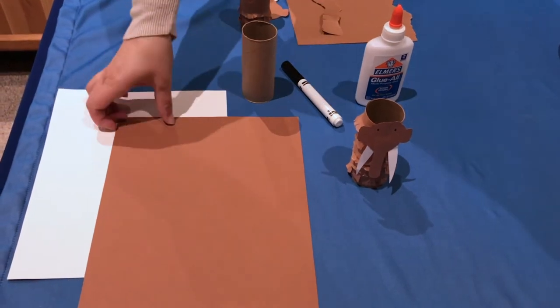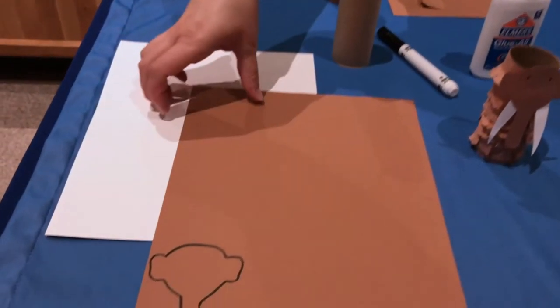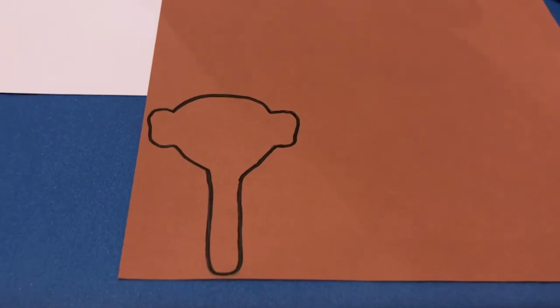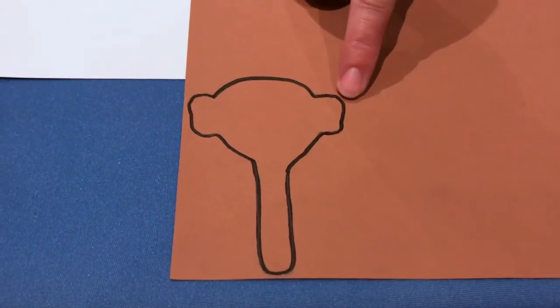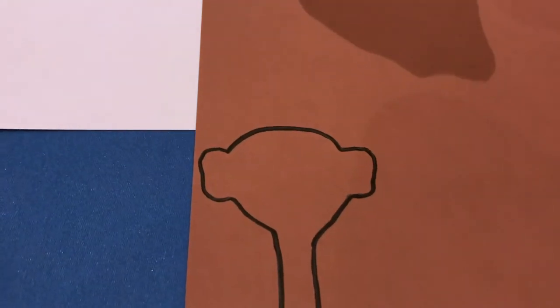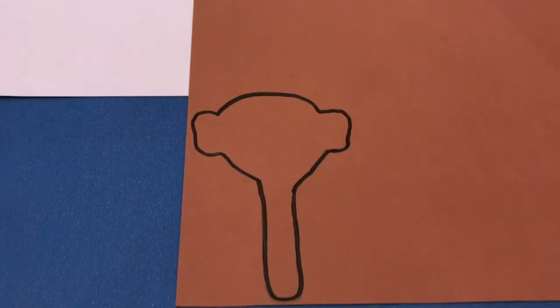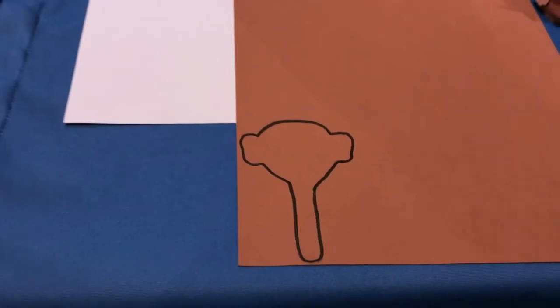So the first thing I did was just freehand drew a mastodon head. Again, it's nice and flat. It's got fairly small ears. They look like hairy elephants, but they have much smaller ears than elephants. There's its trunk.